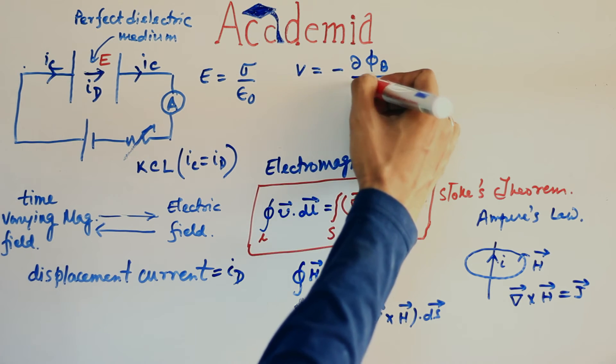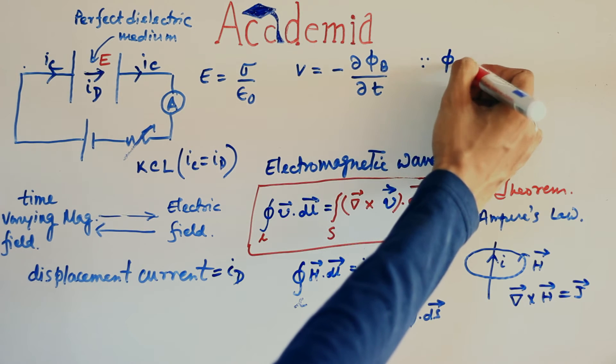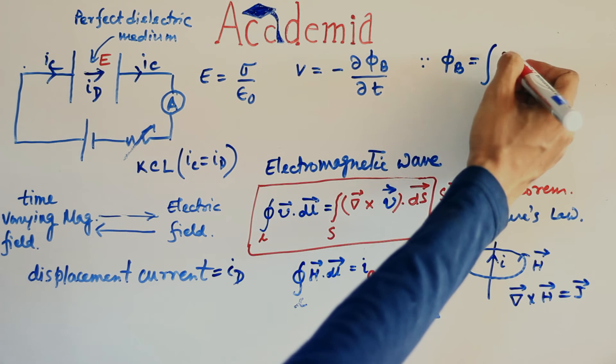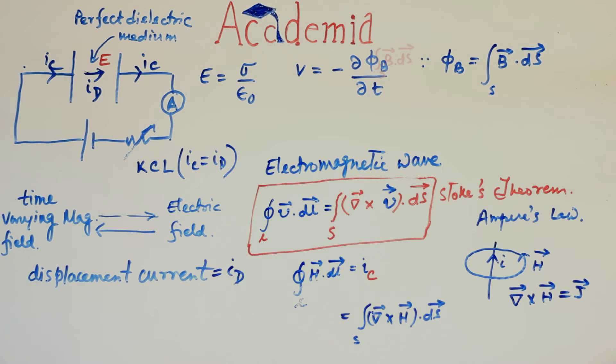Phi B is magnetic flux which can be written as surface integration of magnetic flux density B. So in place of phi B, it can be written as surface integration of B dot dS. Since the order of differentiation or integration is independent of each other, so the order of differentiation integration here is reversed.